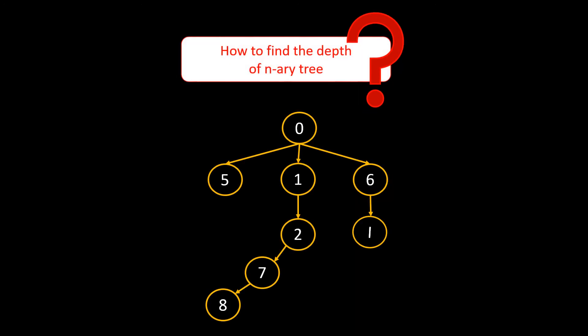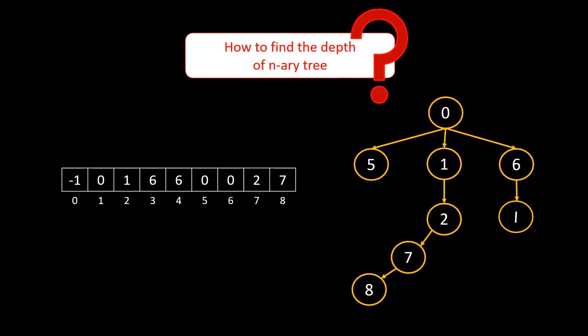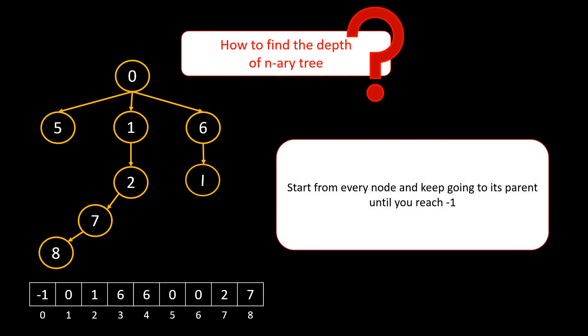Now, let's see how we can find the depth for this tree. This tree can be rewritten as the parent array shown here. Here, the index represents the node and the value represents its parent. As 0 is the root, its parent is marked as –1. For 1, we see parent as 0 and for 2, we see parent as 1. In simple words, we would start from every node and keep going to its parent until we reach –1, that is the root.